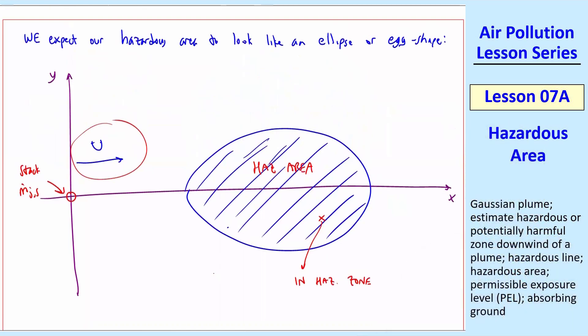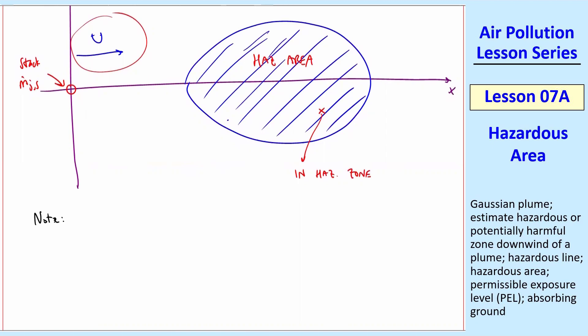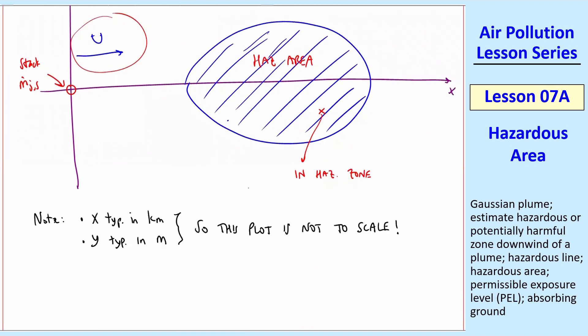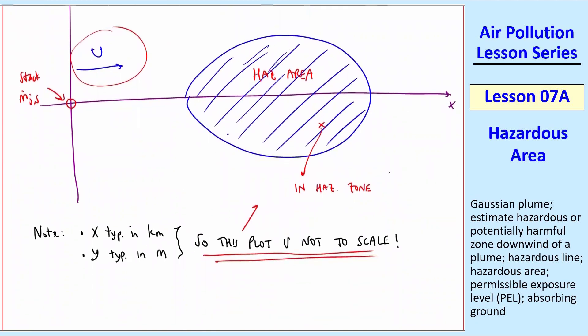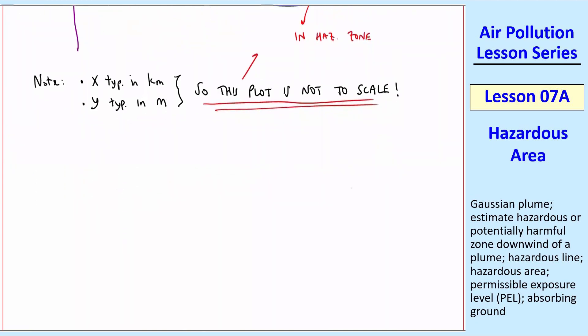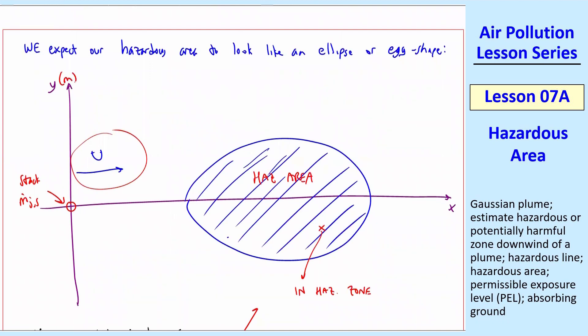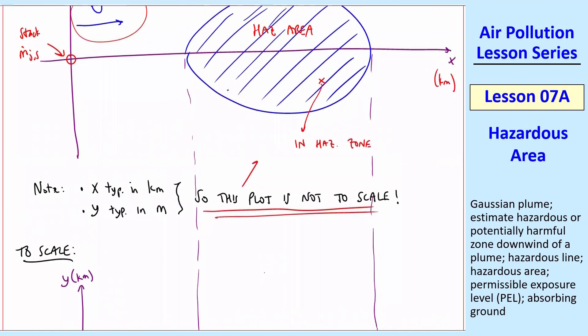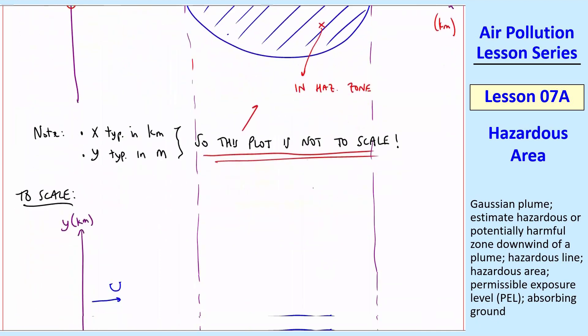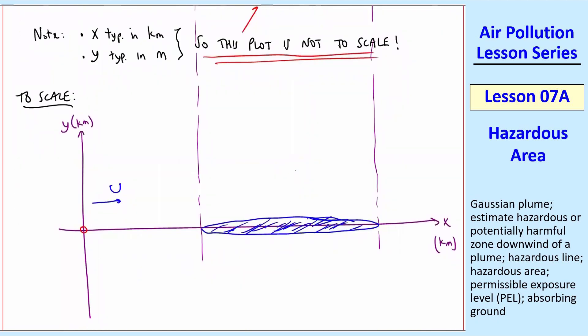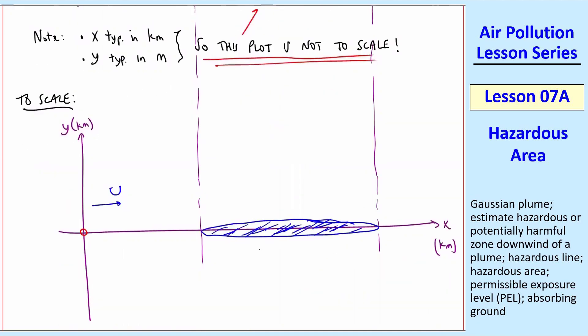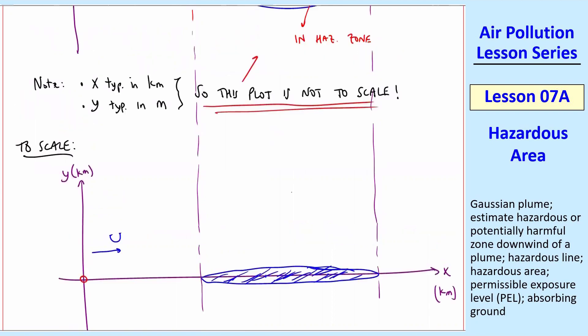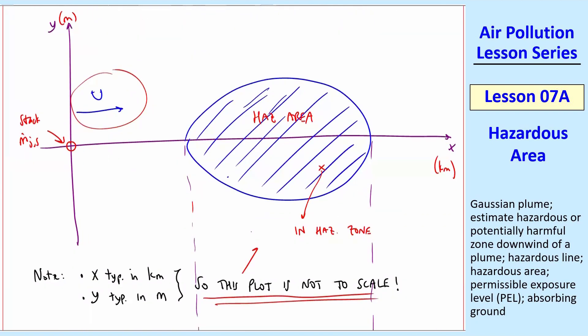This is all qualitative. I'm going to show you quantitatively how to do that in a minute. But a couple comments. The first one is we typically have X in kilometers and Y is usually plotted in meters. So this plot is not to scale. If we would plot X and Y with exactly the same size scale, say both in meters or both in kilometers, let's do both in kilometers. First, let me label this. This is typically, as I said, meters and this is typically kilometers. So let's resketch that both in kilometers.